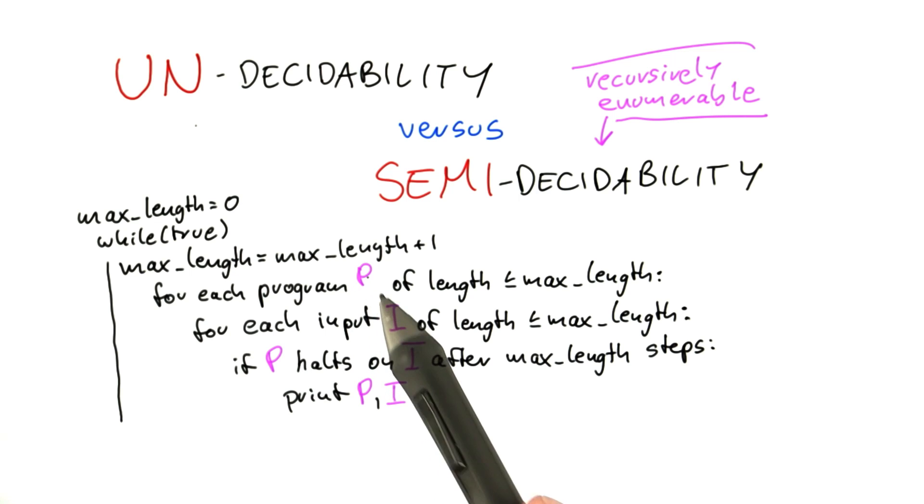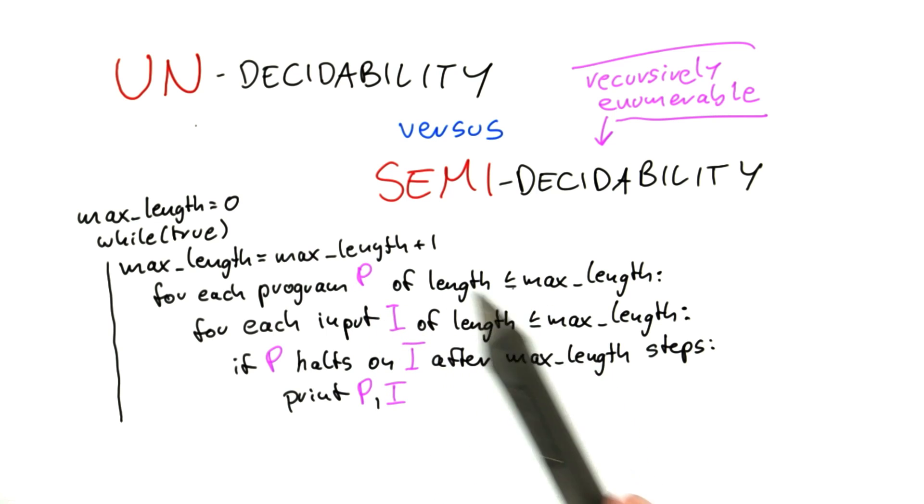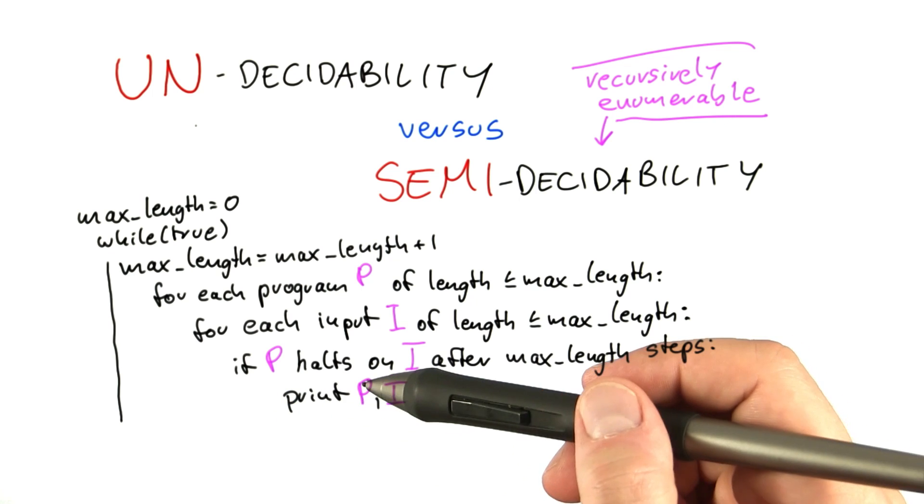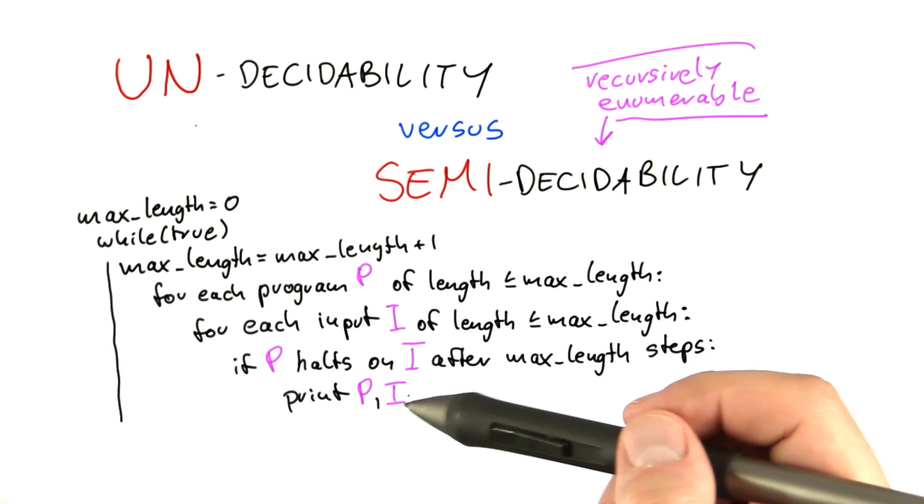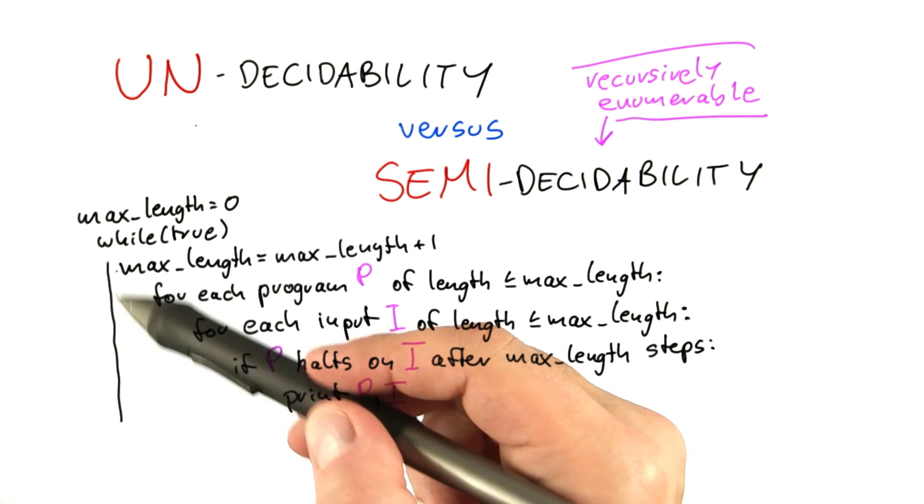So for all combinations of programs and inputs that are shorter than this value max_length here, we run a simulation for exactly max_length steps, and if the program halts on the input after exactly max_length steps, then we print the program and we print the input. If it hasn't halted yet, don't care, throw it away, wait until the next loop.